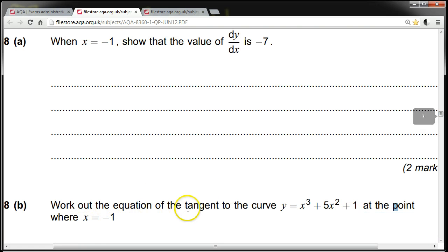Work out the equation of the tangent to the curve y equals x cubed plus 5x squared plus 1 at the point where x equals minus 1.